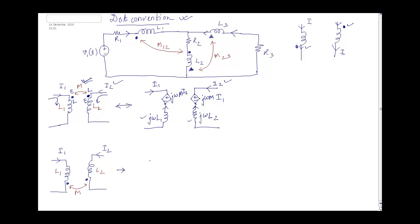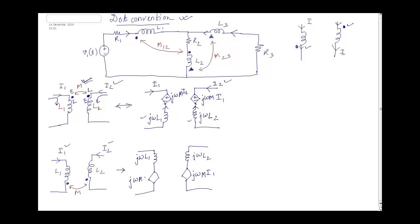Similarly, for another configuration, we draw the inductor first, then the dependent source at the dot position. L1 becomes jωL1 and L2 becomes jωL2. The magnitude of the dependent source is jωM; for the source in the L2 branch it is because of current I1, so it is jωM·I1. For the source in the L1 branch it is because of current I2, so it is jωM·I2.